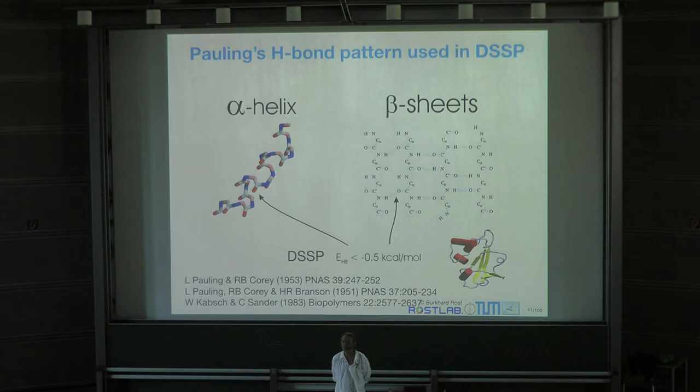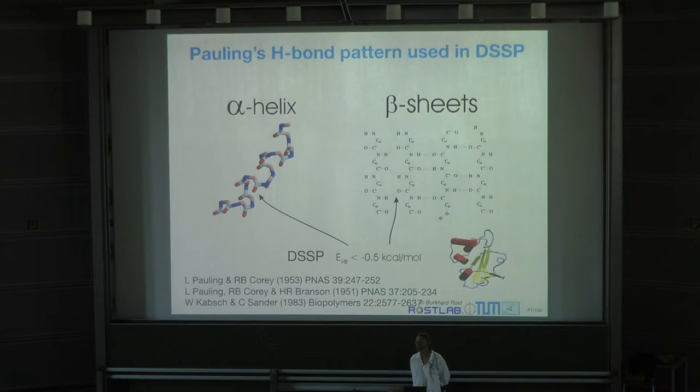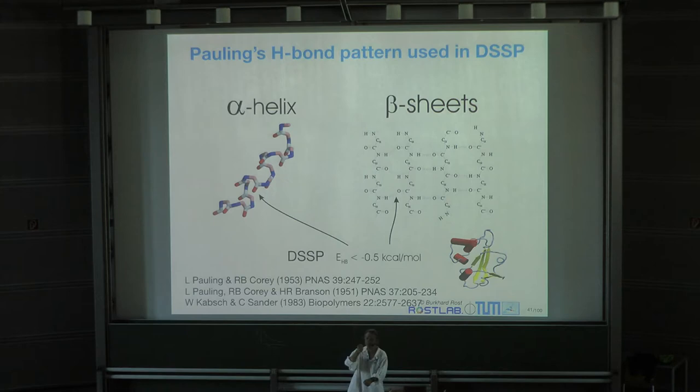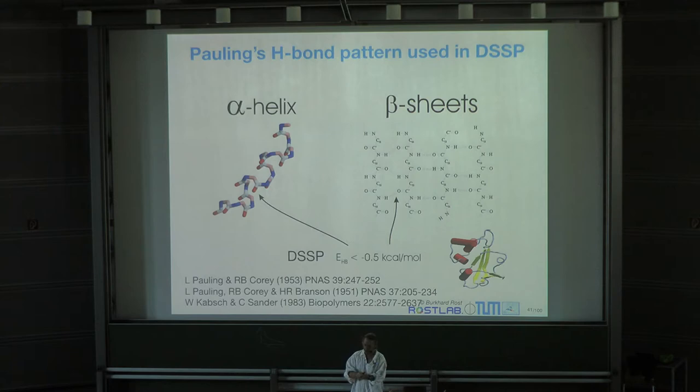A student asks whether it is always i+4. In biology, nothing is always i+4 — the true average is 3.6 residues per turn. There are also 3-10 helices (roughly i+3) and pi helices (i+5), but these are the only two variants observed so far.